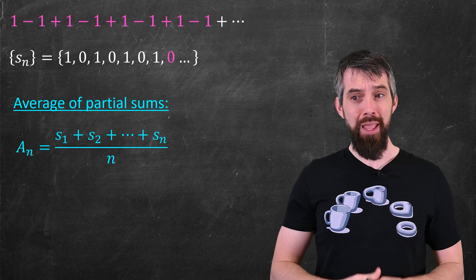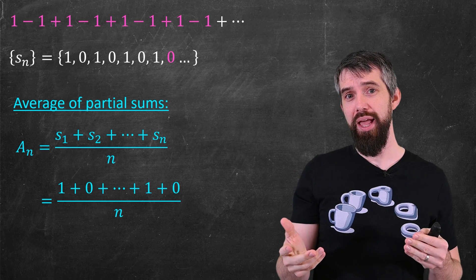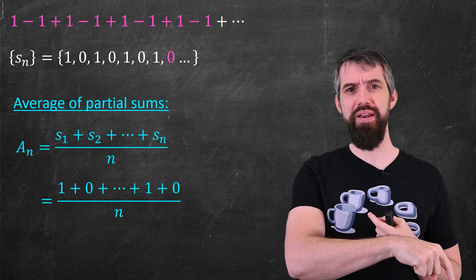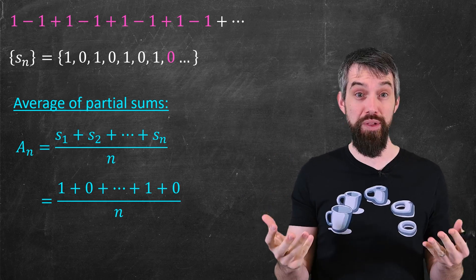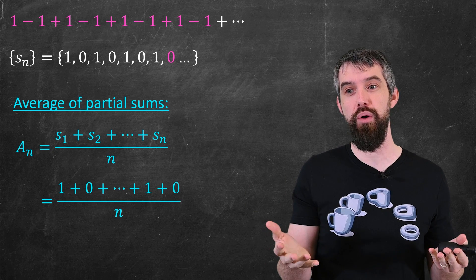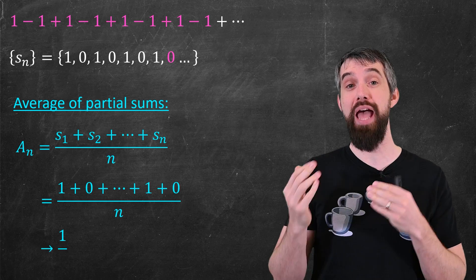For example, if I try to write this down, it's just 1 plus 0 plus 1 plus 0 plus 1 plus 0. When n is even, there's exactly half the number of 1s on the top. Like, it's n divided by 2 on the top, because half of them are 1 and half of them are 0. n divided by 2 on the top, n on the bottom, this goes to the value of a half.